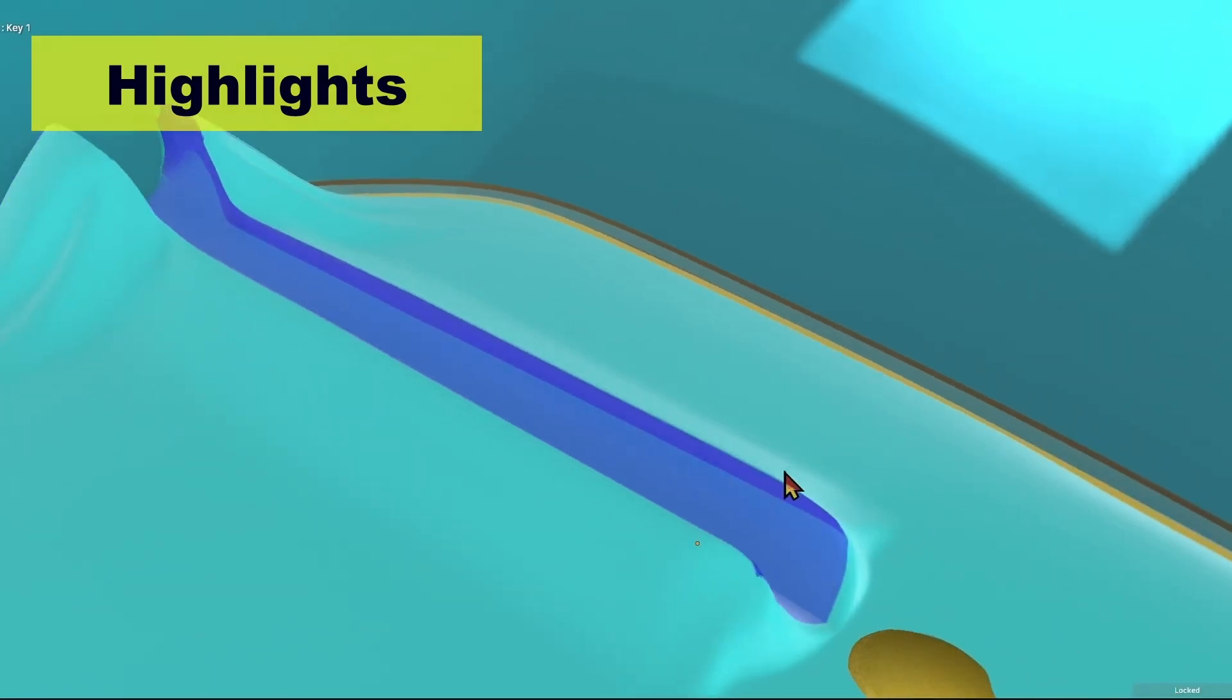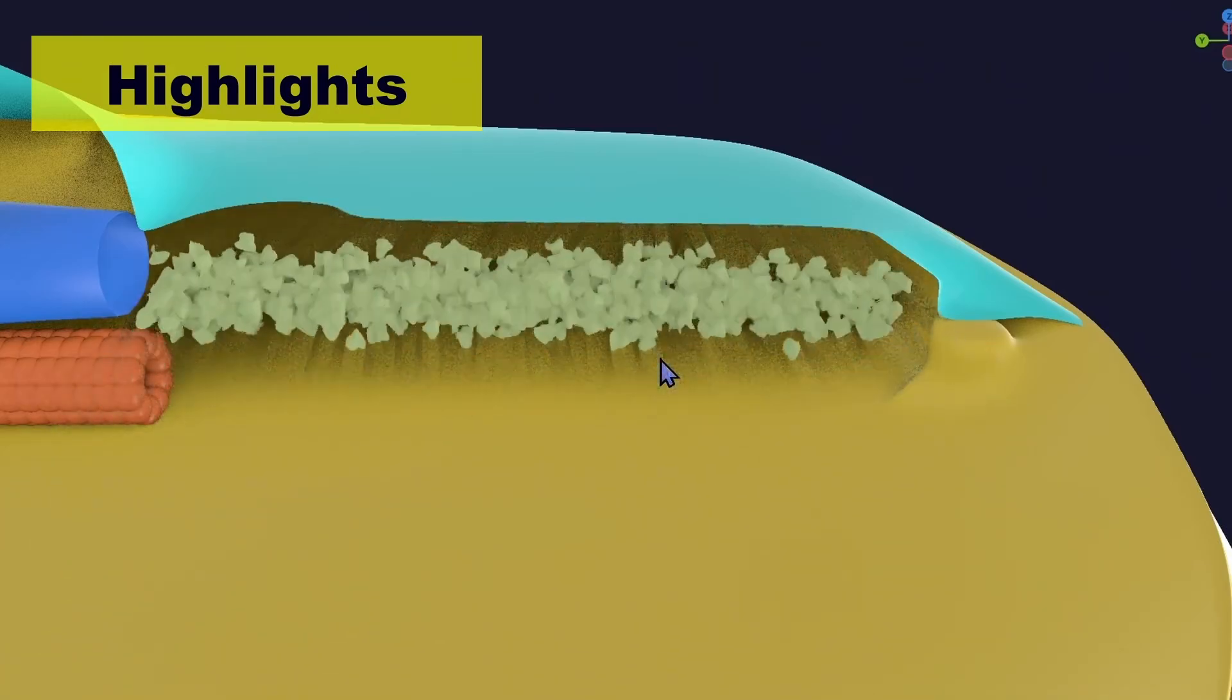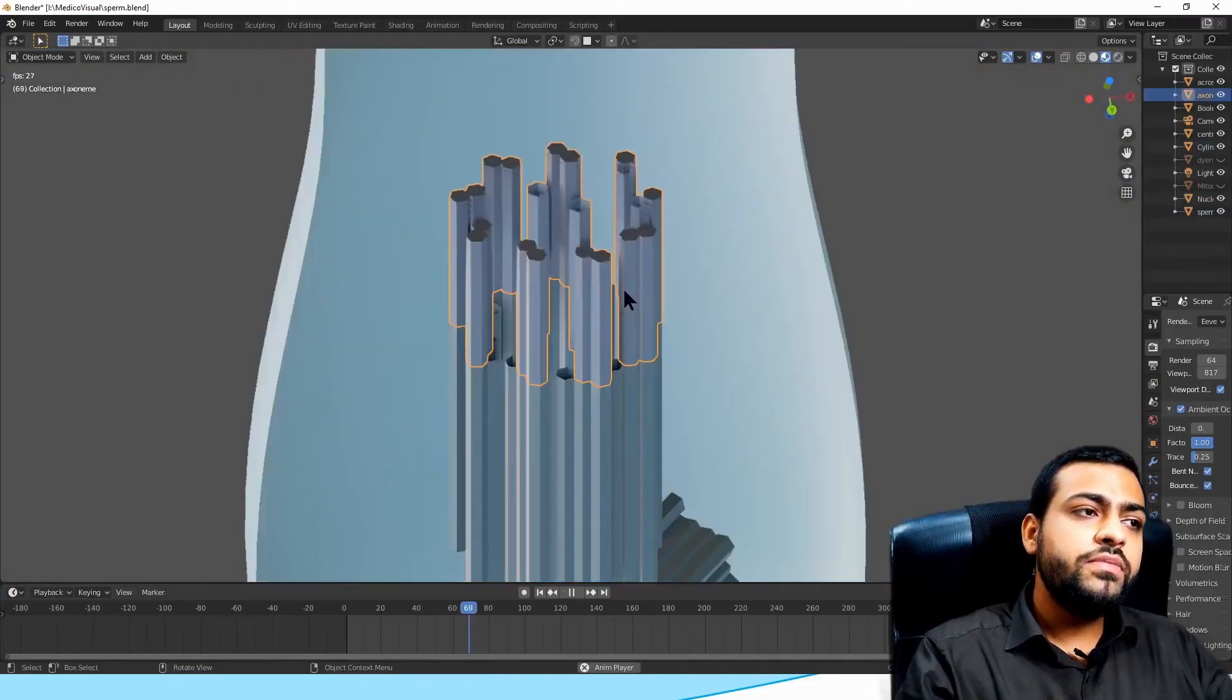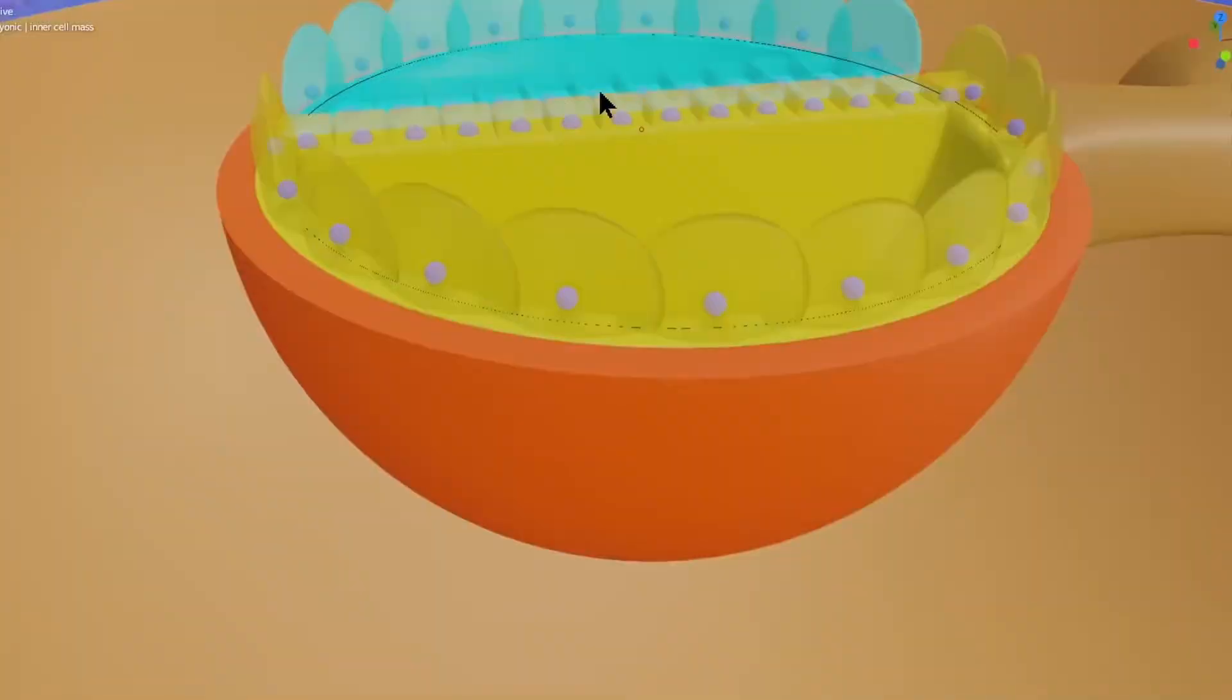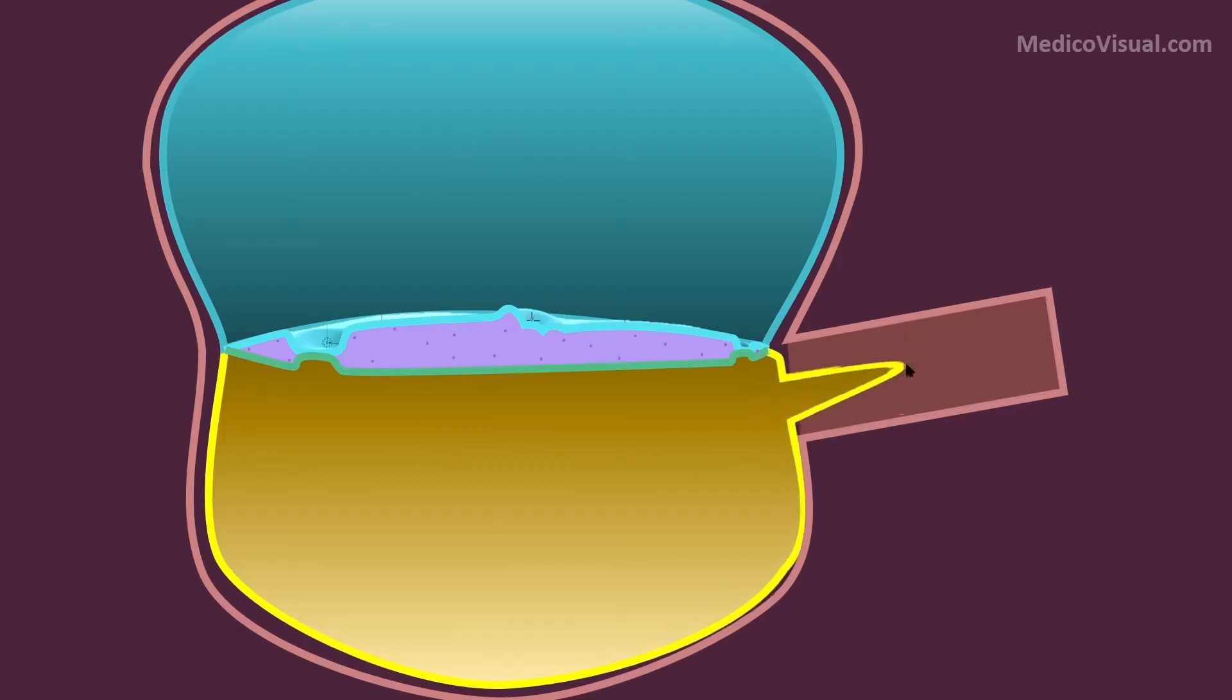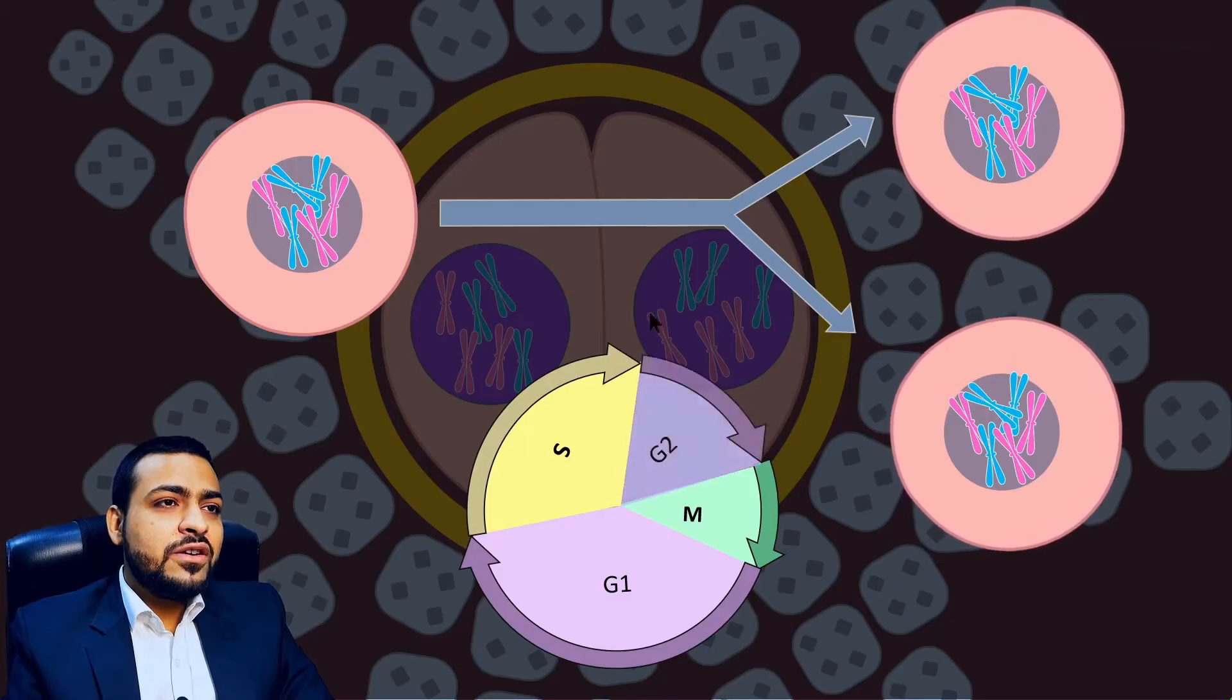They will move and aggregate like this. We have tubulin, we have centrioles - one centriole keeps on aligning proteins. This is a complete yolk and epiblast cavity. Here you can see the yolk sac; they will grow.